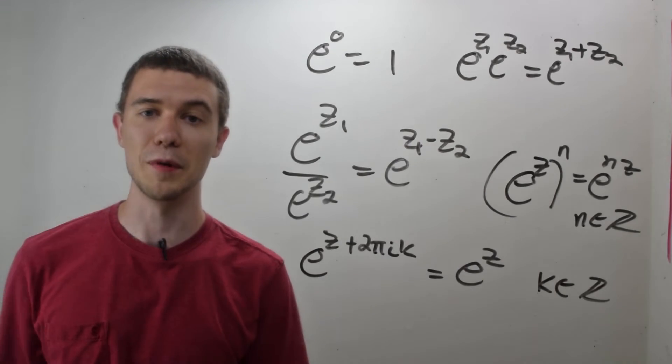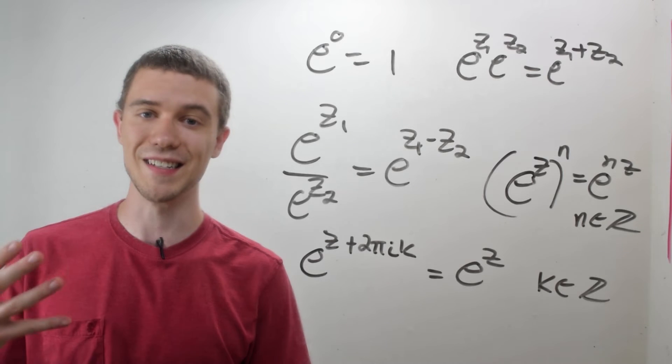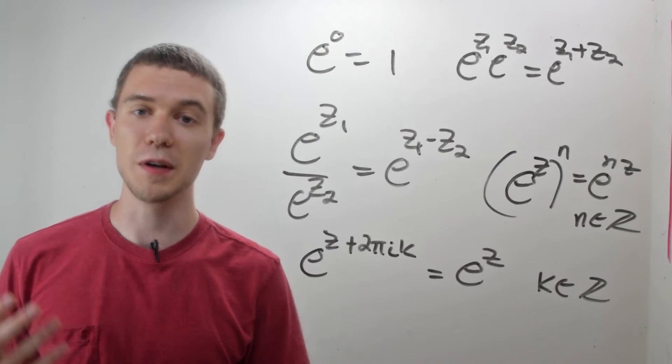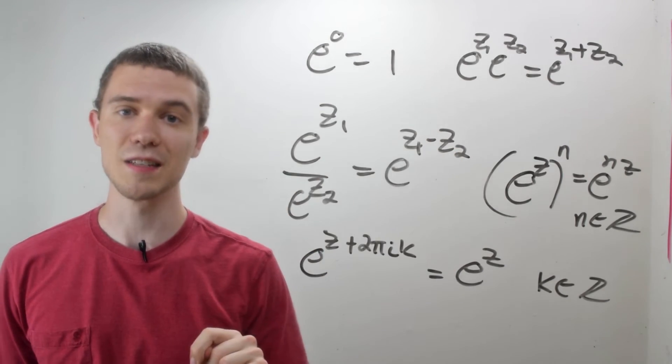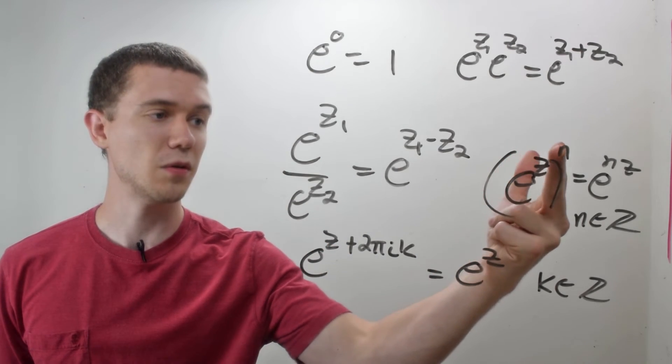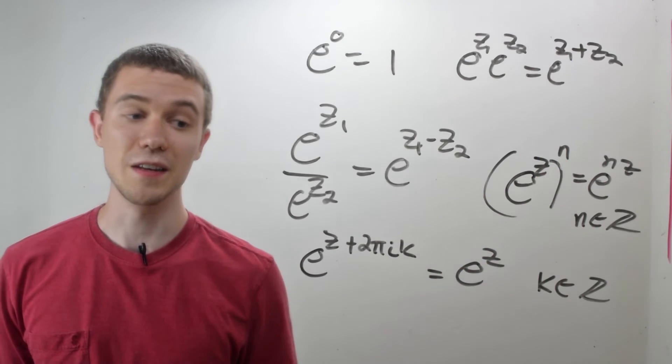So I'll just wrap up with some properties of the exponential function. We already saw that e to the 0 is 1. That's nice. That kind of carries over from real analysis. We also have the familiar properties of exponents, such that if I multiply like bases, I add exponents. If I divide like bases, I subtract exponents. An exponent to an exponent, you multiply those exponents, so long as this exponent is in the integers.